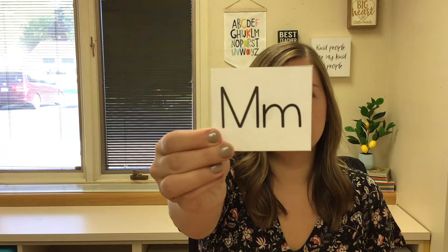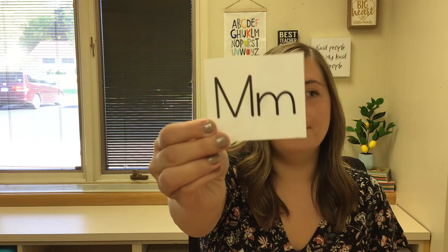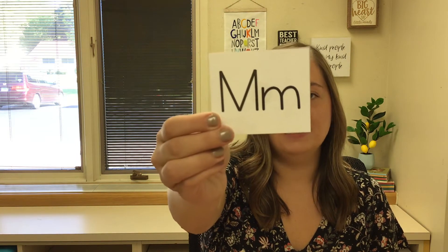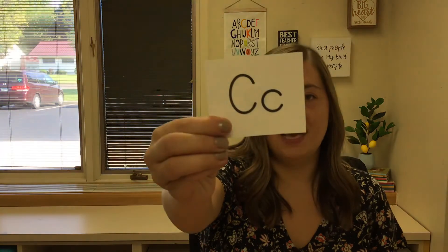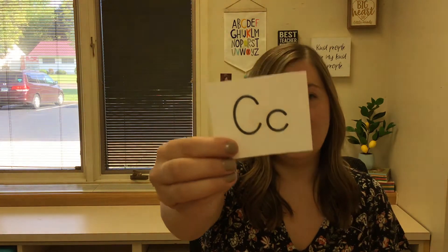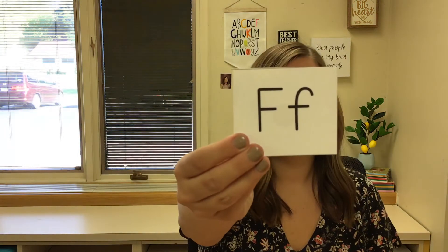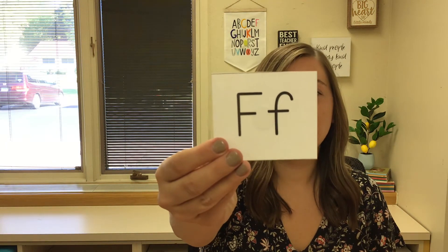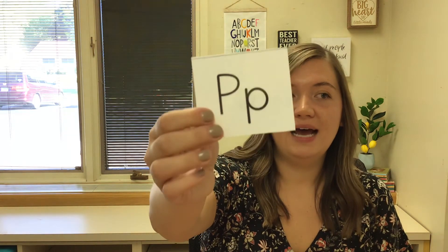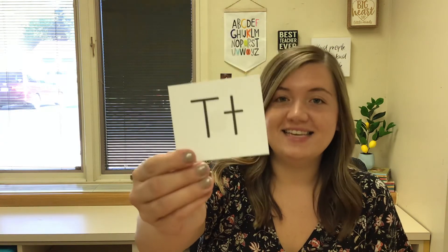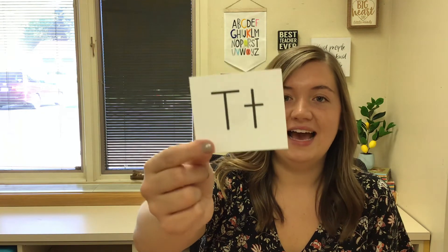M says mm-mm-mm as in monkey. What about this one? C says c-c-c as in cat. What about this one? F says f-f-f as in fish. This one? P says p-p-p as in pig. And today's letter of the day — T says t-t-t as in tiger.